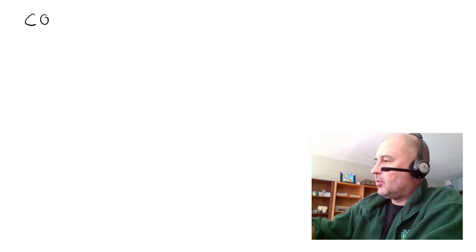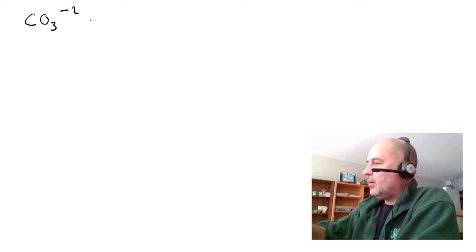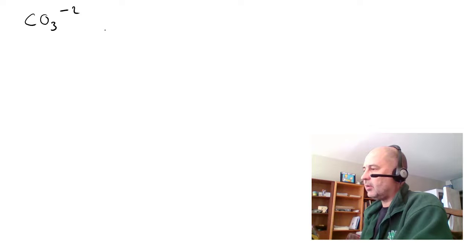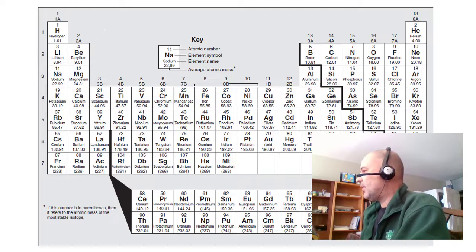So first, we want to determine or draw the Lewis structure for carbonate. Step one, you need to determine the number of valence electrons. You go to the periodic table to do that.